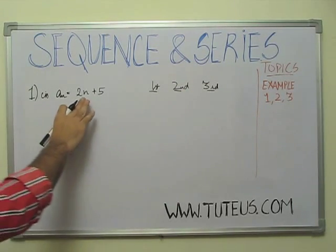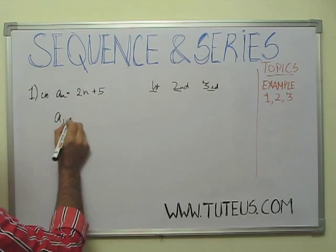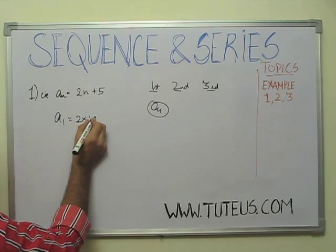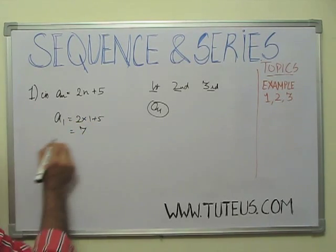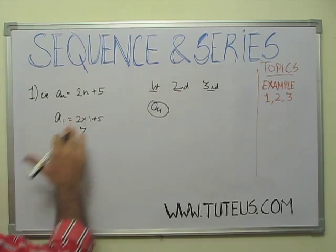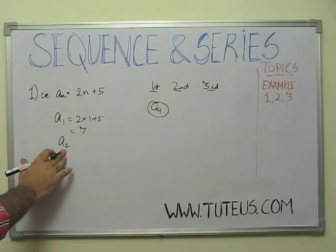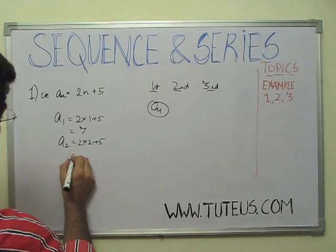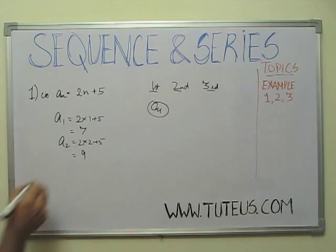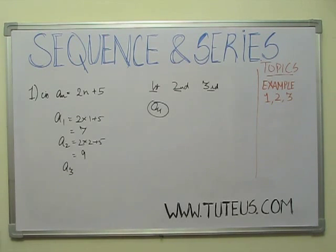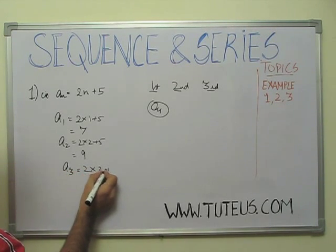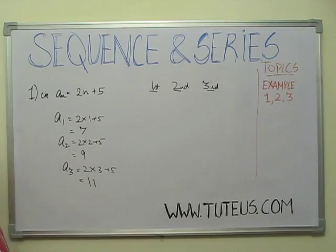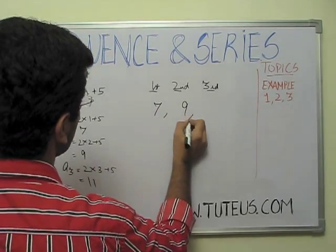So, if I keep the n value 1, then the sequence term will come. So, 2 into 1 plus 5. So, this is 7. For the second place, 2 into 2 plus 5, this is the second term, 11.